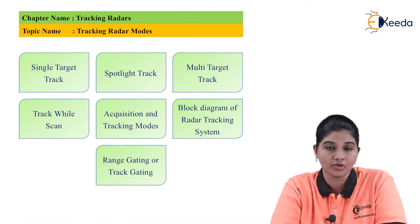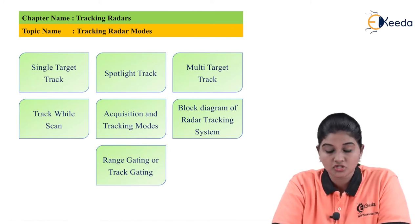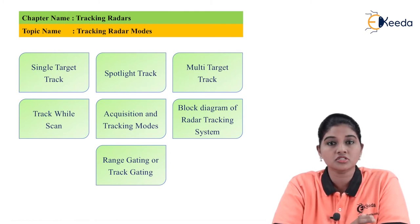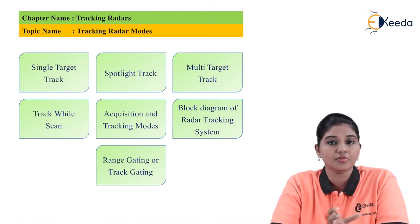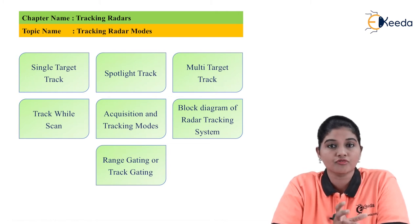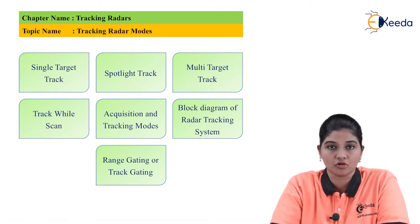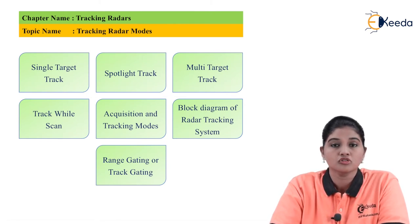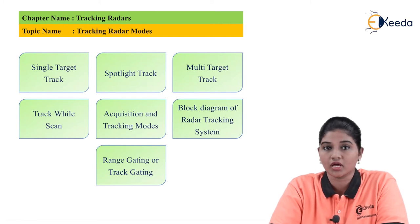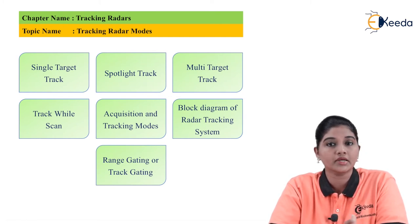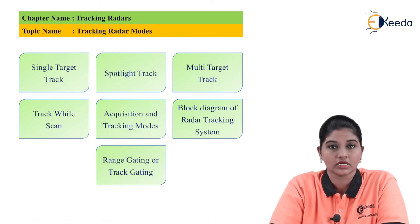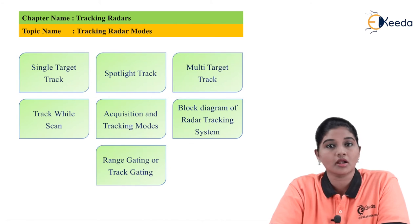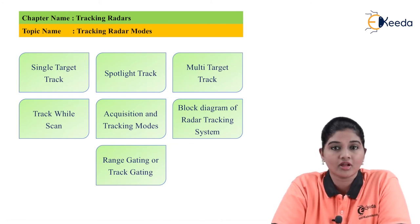The next type is spotlight track. In spotlight track, the radar first tracks the first object continuously for a particular period of time. After tracking the first object for that time period, the radar moves to the next object and tracks it for a certain amount of time, and likewise continues with the other objects present in the system. For every object a particular amount of time is allocated, and after completing the last object the radar comes back to the first object and repeats the same cycle of operation.